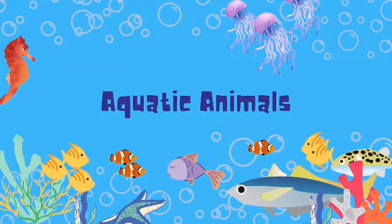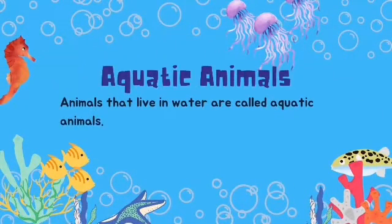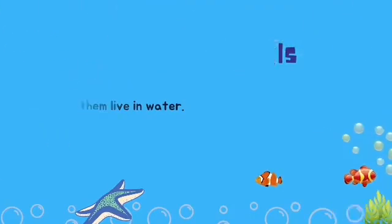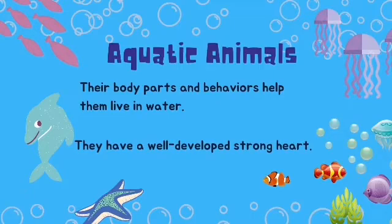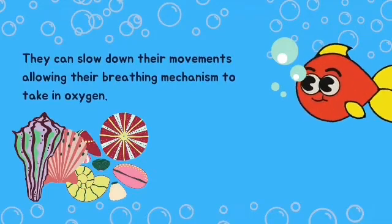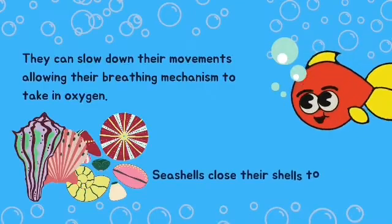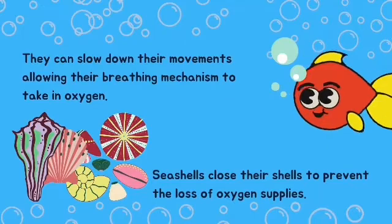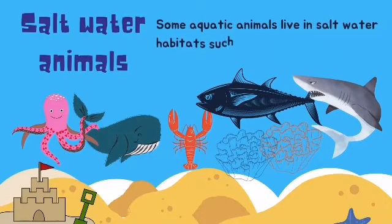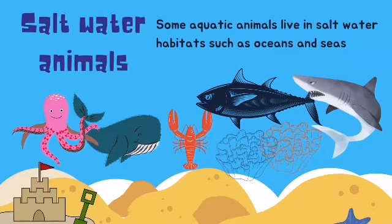Animals that live in water are called aquatic animals. The body parts and behaviors of aquatic animals help them live in water. Aquatic animals have a well-developed and strong heart. They can slow down their movements, allowing their breathing mechanism to take in oxygen. Seashells close their shells to prevent the loss of oxygen supply. Fish have tails and fins for swimming and gills for breathing underwater. Some aquatic animals live in saltwater habitats such as oceans and seas. Sea anemone, tuna, shark, and whale are saltwater animals.